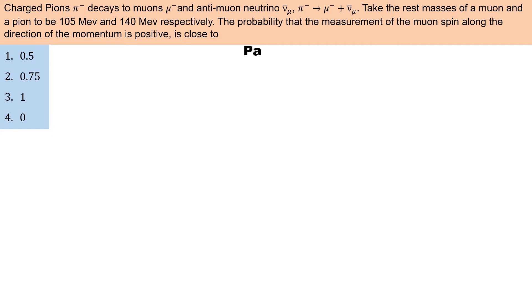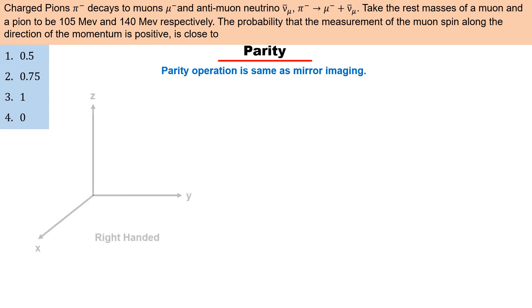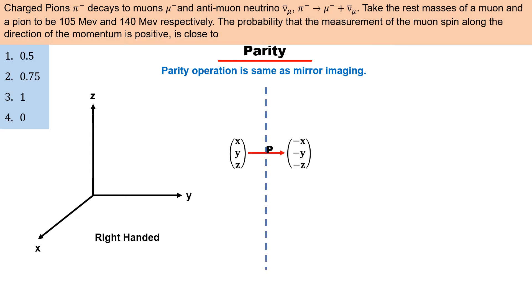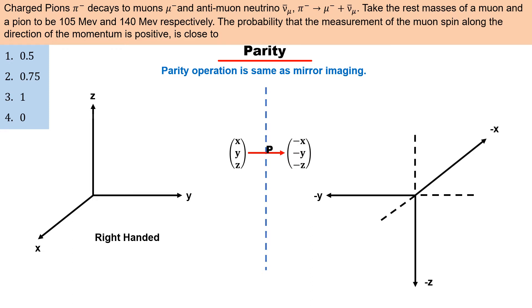सबसे पहले parity को समझ लेते हैं। Parity का मतलब है mirror image। अगर किसी coordinate axis पर parity operate की जाए तो उस coordinate के axes अपने mirror image में transform हो जाते हैं — जैसे x-axis, minus x-axis में; y-axis, minus y-axis में; और z-axis, minus z-axis में। कहने का मतलब है parity operation से एक right-handed coordinate left-handed coordinate में transform हो जाता है।